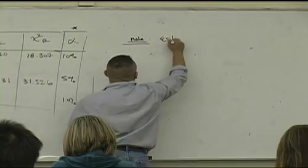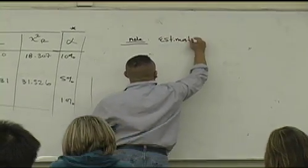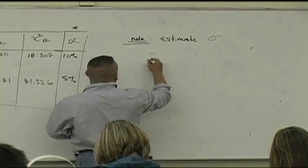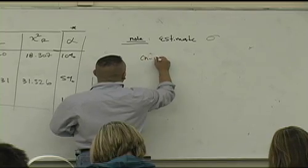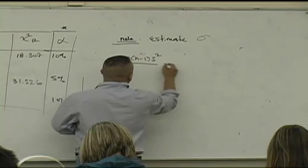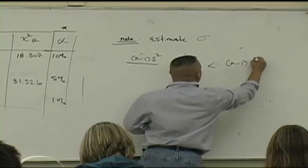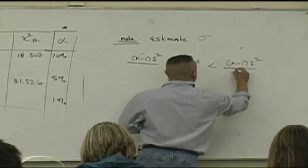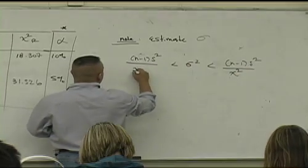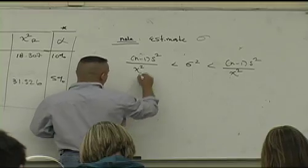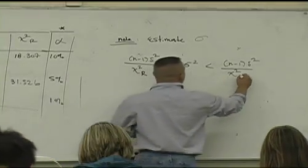If we want to estimate standard deviation, n minus 1, s squared, over something, less than sigma squared, less than n minus 1, s squared, over chi squared something, chi squared, what is it? Right, chi squared left, good, right, and good. Remember, in the format, it's the opposite. It's the opposite in the format.